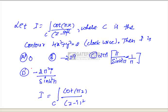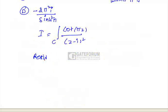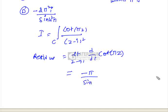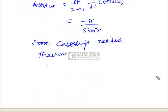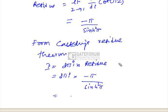To find I, we compute the residue of the function. The residue equals the limit as z tends to i of d/dz of cot(πz), which equals minus π divided by sinh²(π). By Cauchy's residue theorem, I equals 2πi times the residue, giving I equals 2πi times (minus π / sinh²(π)), which is option T.